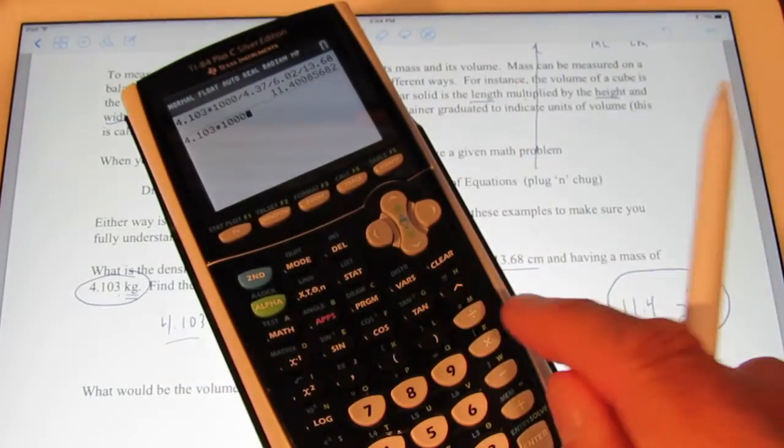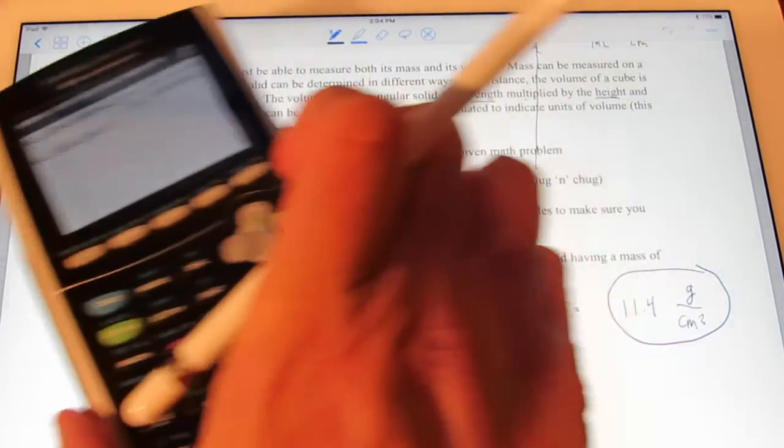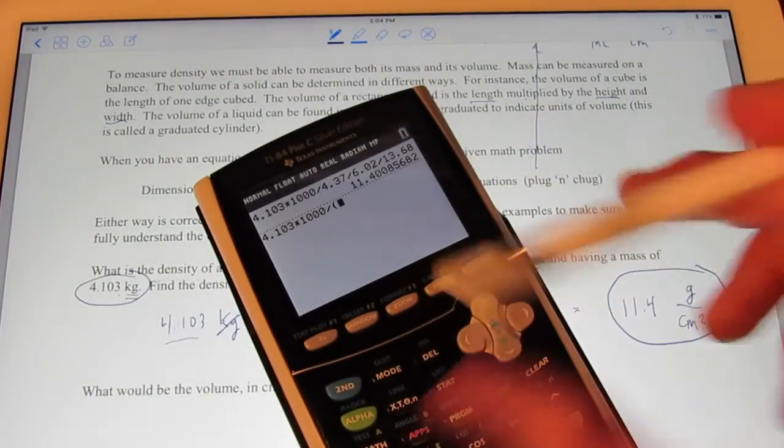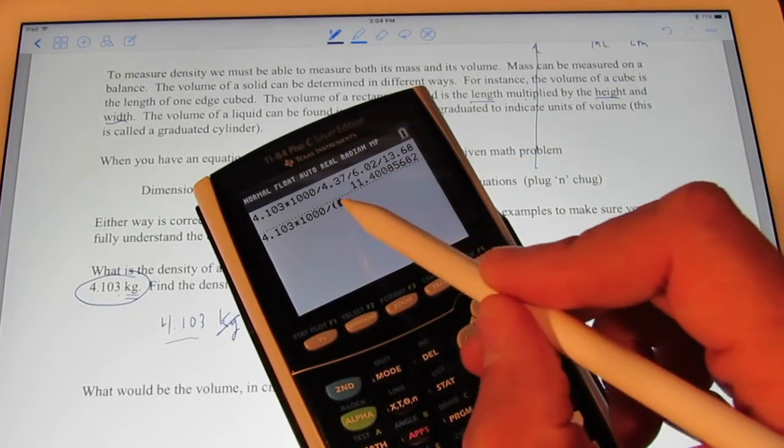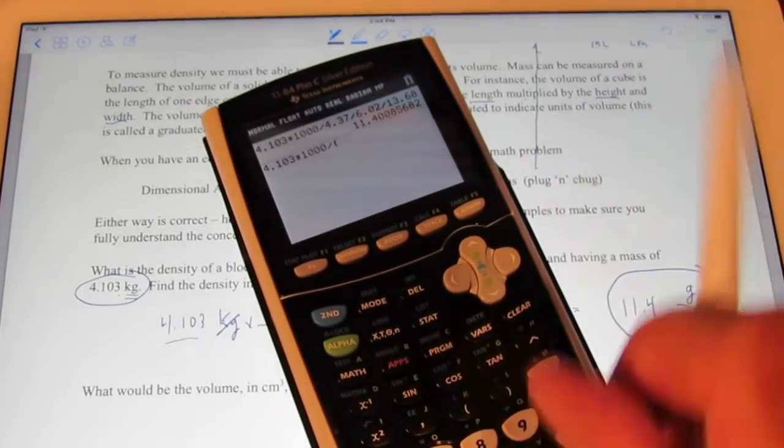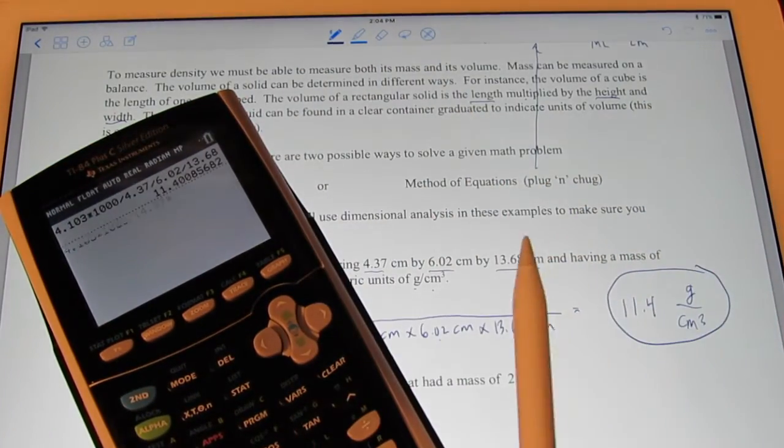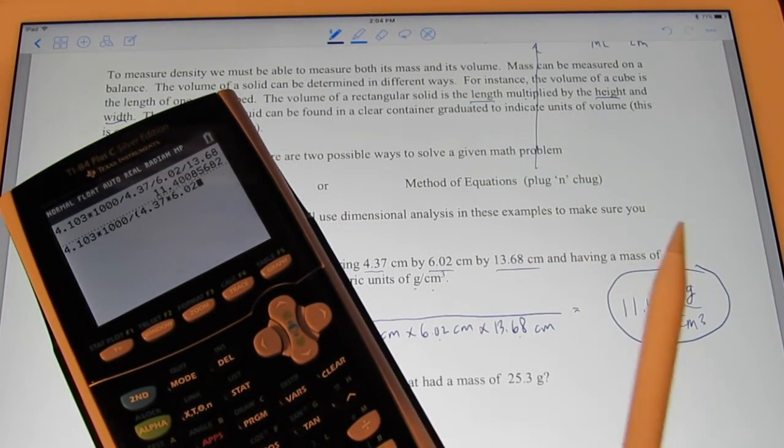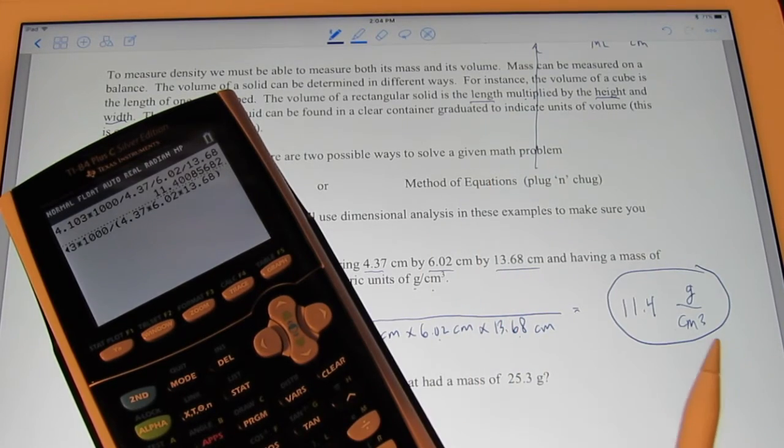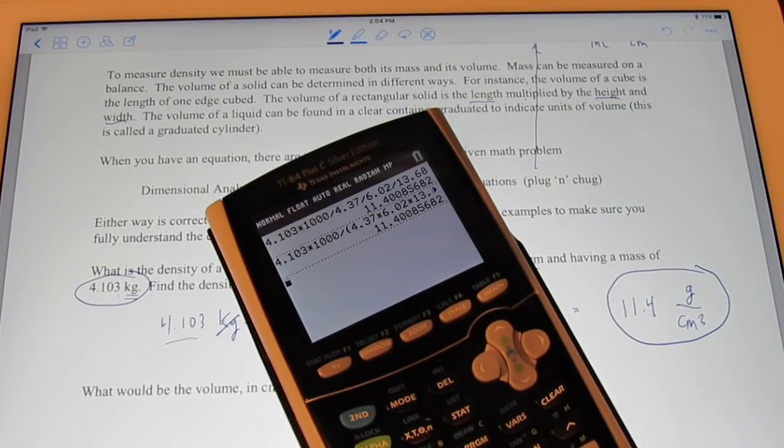Now, I'm going to divide by, I'm going to use my parentheses key here, kiddos, okay? The product of these three. So, I'm going to use my parentheses key to tell my calculator that I want to divide by the product of those numbers. So, let's see. 4.37 times 6.02 times 13.68. Close off my parentheses. And now I can press enter. And you see I get the same answer.